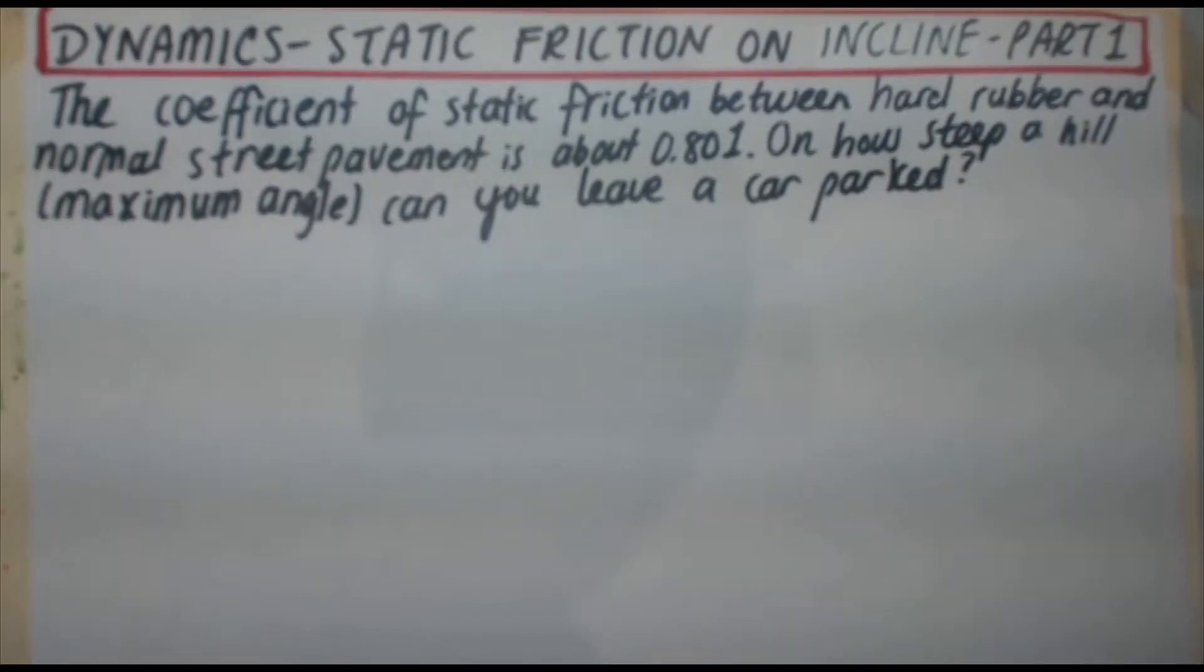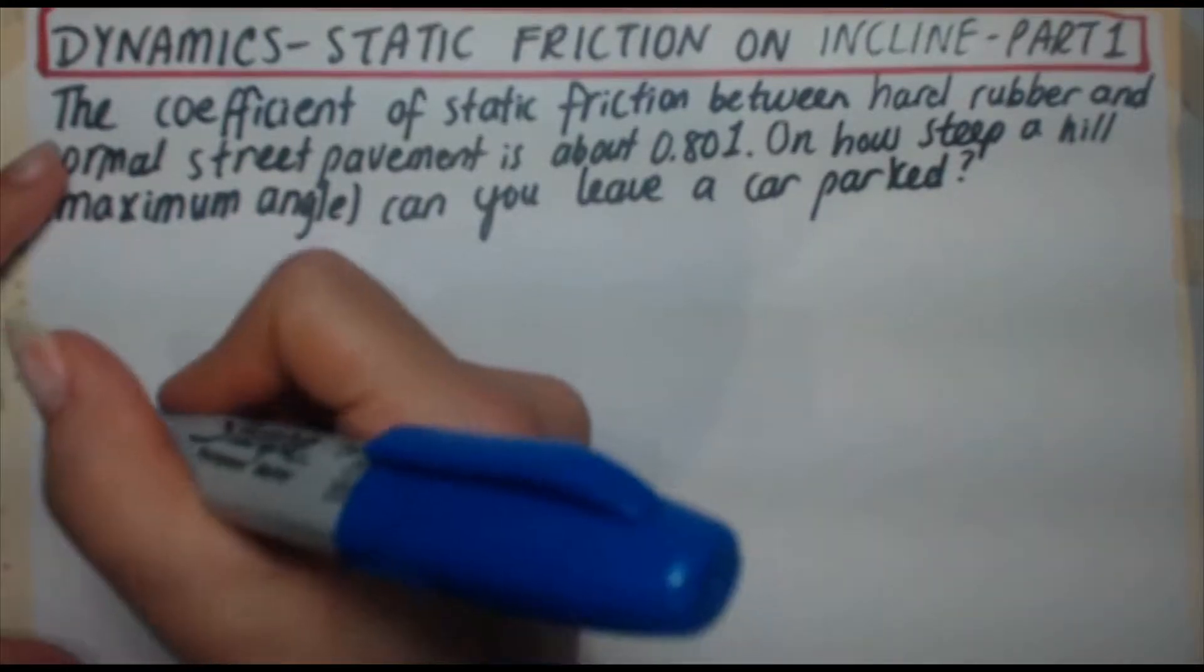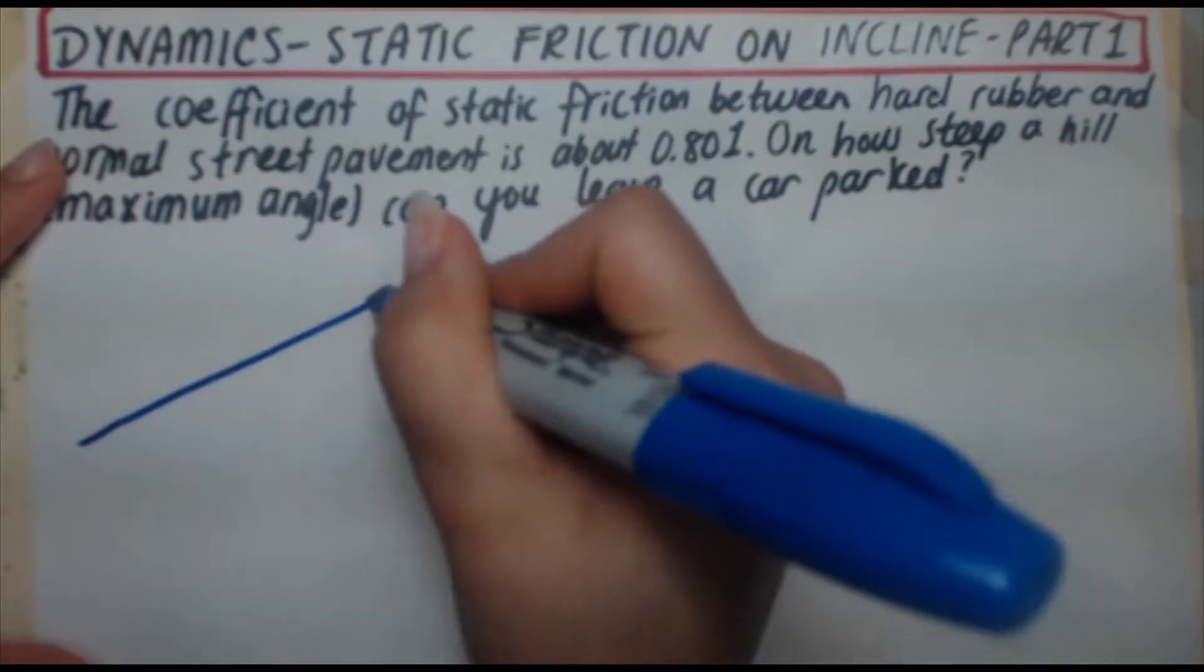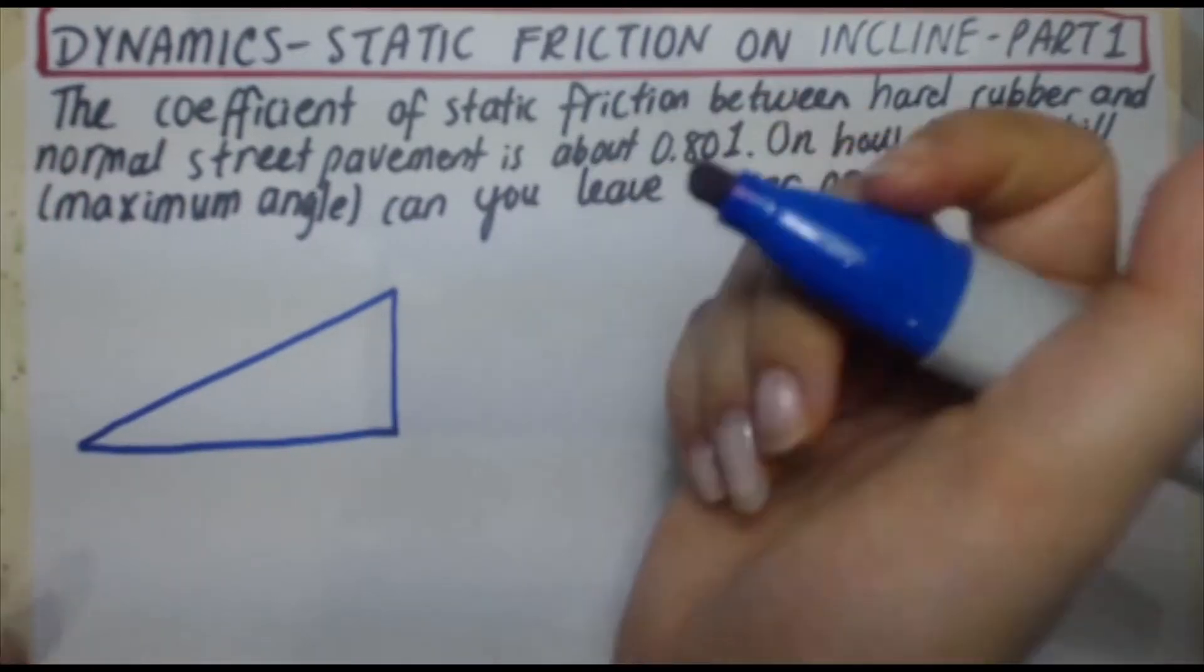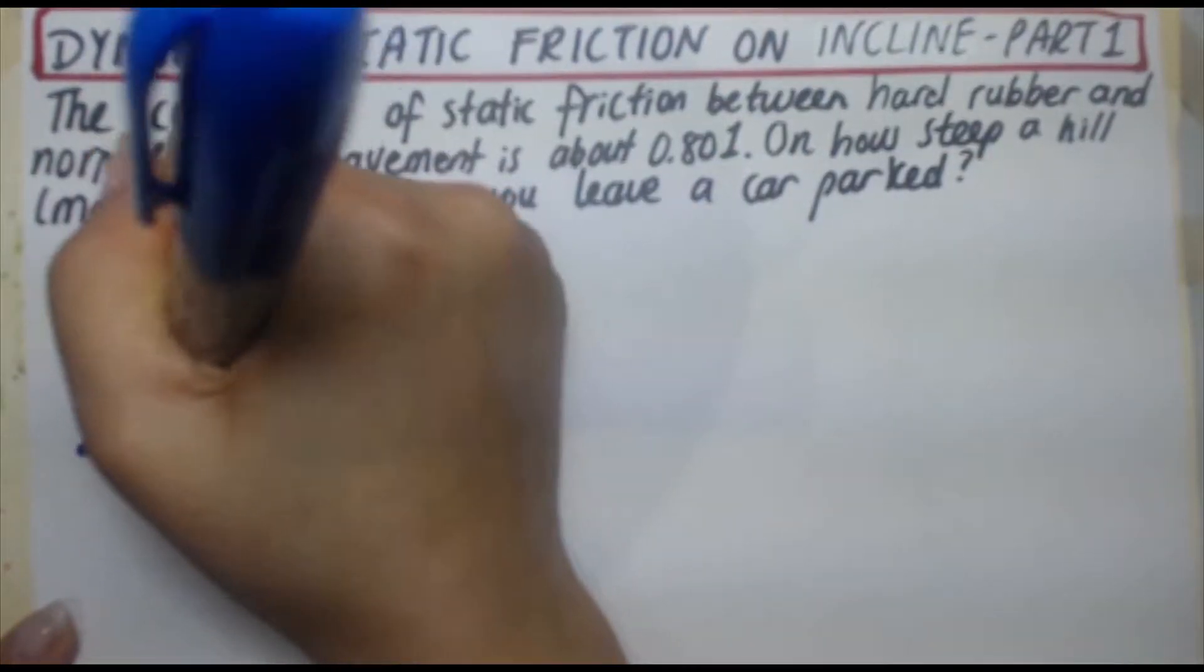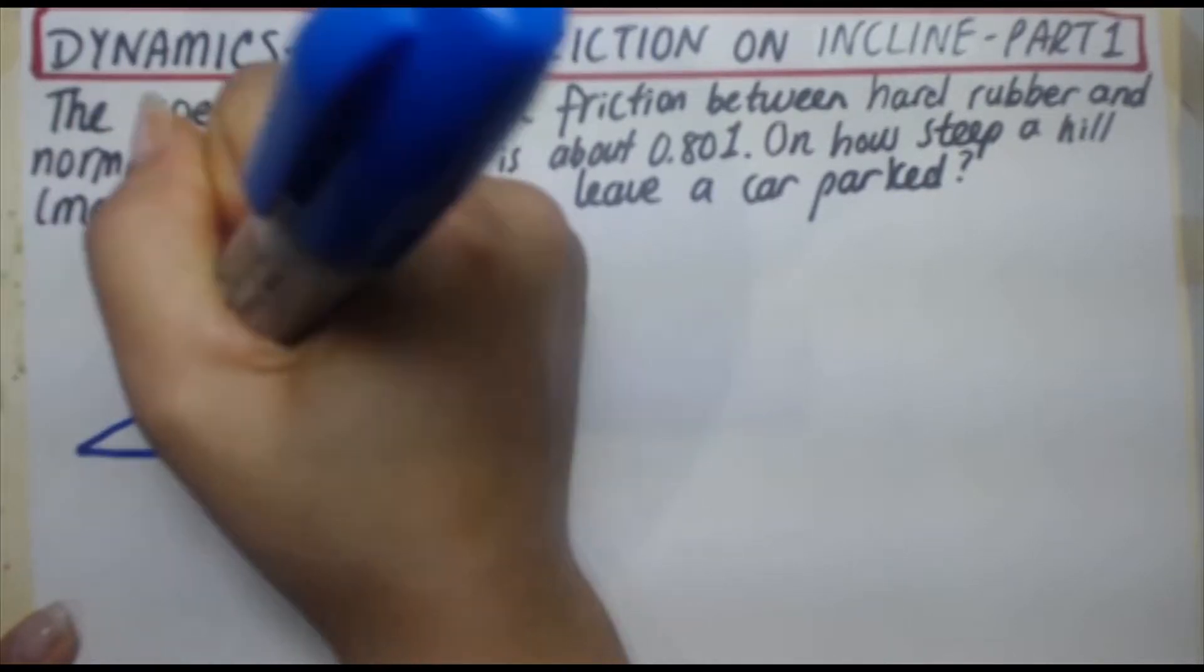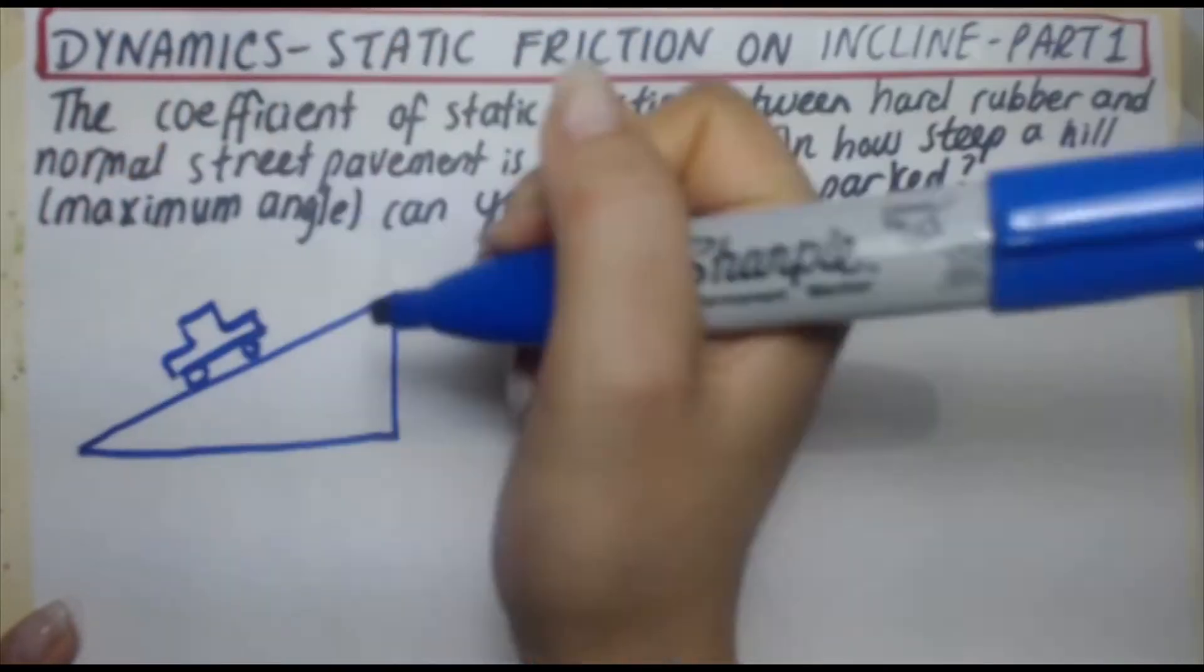First things first, like every other problem, we want to draw a free body diagram. So now my incline is just going to be a right angle triangle facing to the left. Now my car is also going to be a very simple drawing. Again, simpler the better. So there's my car.